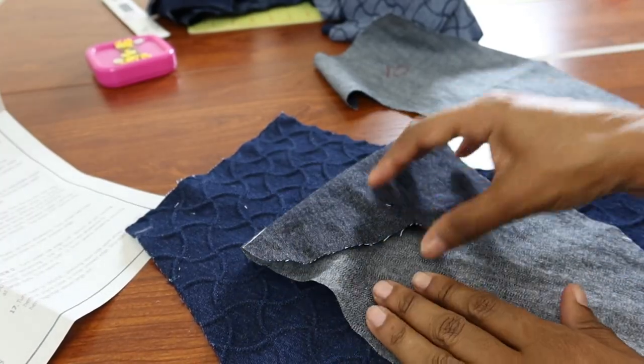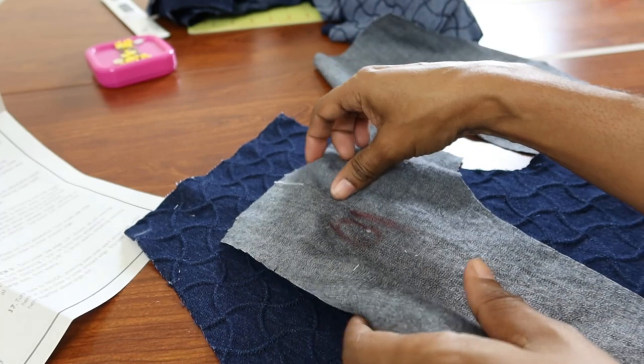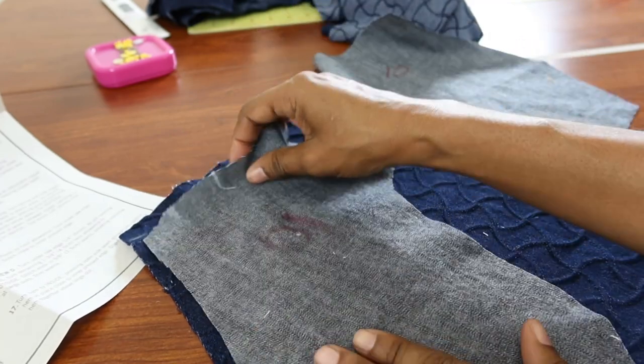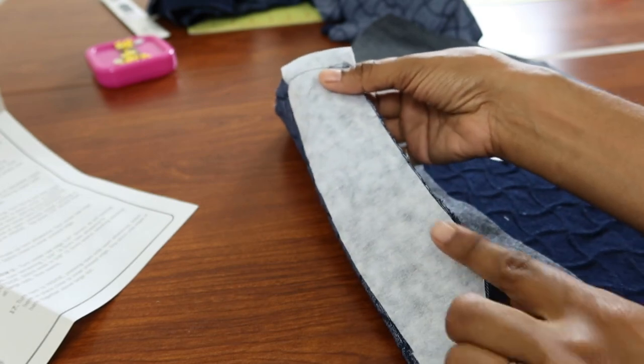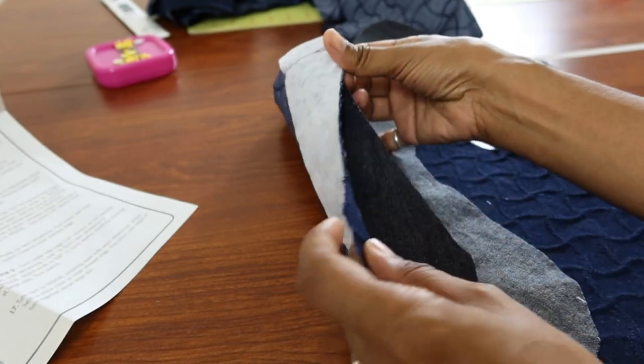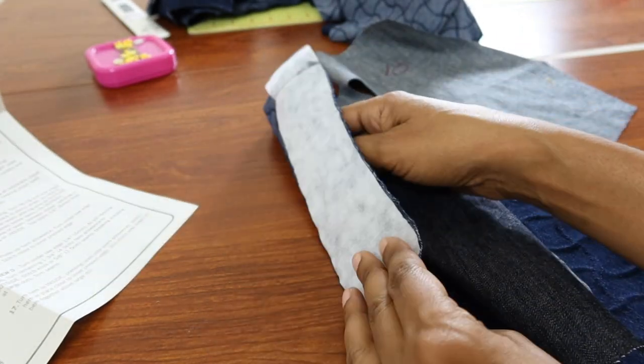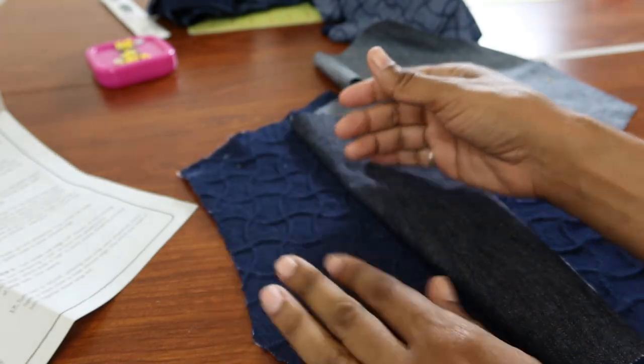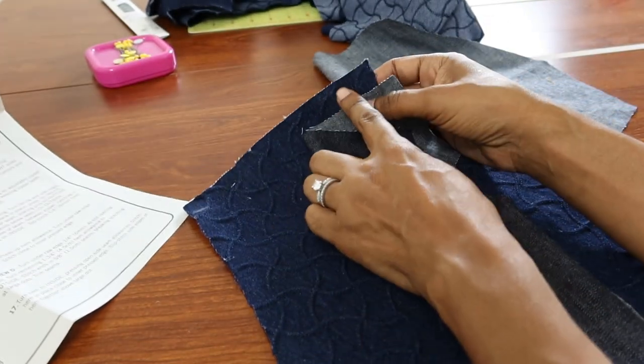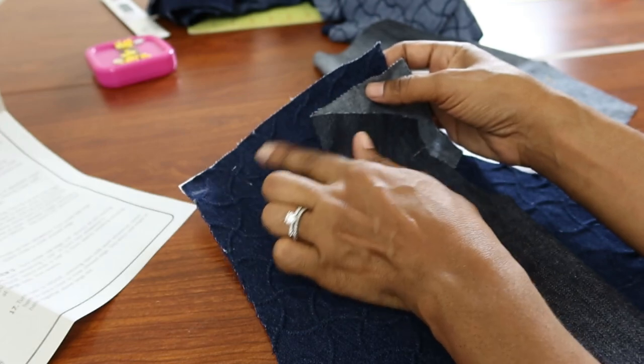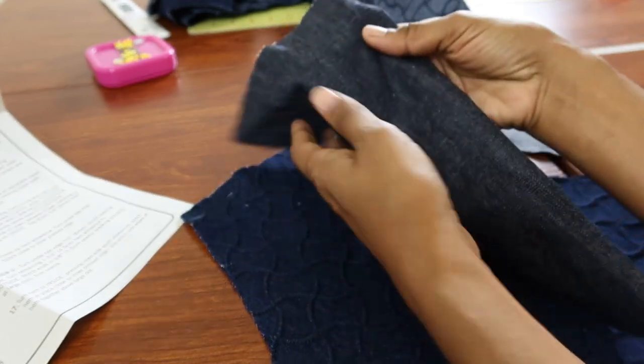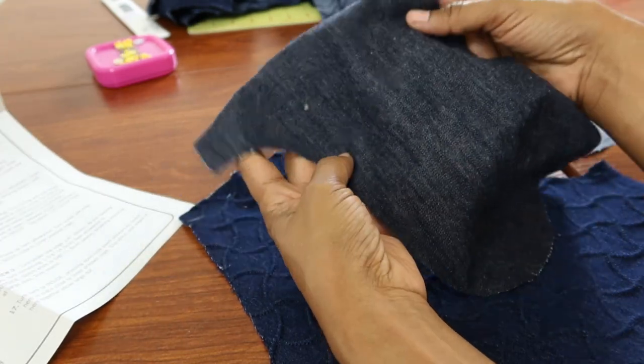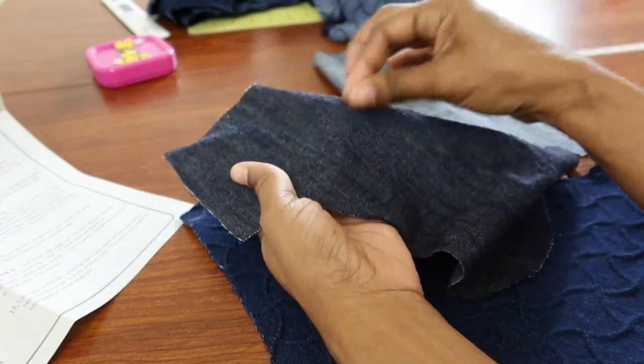I cut out all my pieces and now I am ready to start sewing. I did place some interfacing along the inside here. This is to stabilize the pocket area per the directions, and then I did some stay stitching at the top. I am using this fabric that I had left over from a different project as my pocket lining fabric.